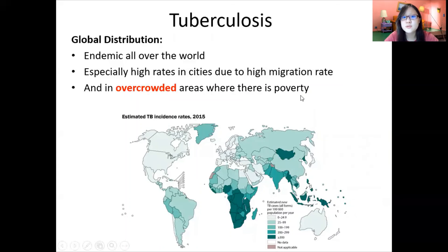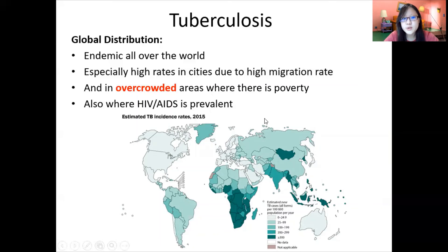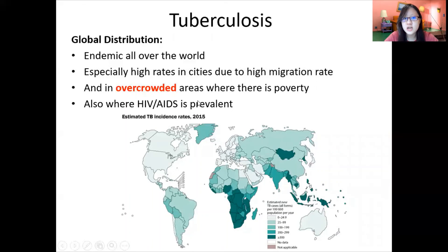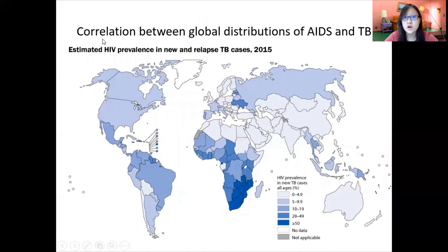Other places with high TB cases include Africa and parts of Asia and Southeast Asia. High rates occur because of poverty, overcrowded areas, and poor ventilation, which allow TB to spread more easily. TB is also prevalent where HIV or AIDS is prevalent — especially in Africa, where populations are not only poor but also have high rates of HIV, which lowers the immune system and makes individuals more likely to contract TB and develop symptoms. The correlation between global distribution of AIDS and TB often comes up in exams: HIV causes immunodeficiency, increasing the risk of TB development, as TB is an opportunistic infection.